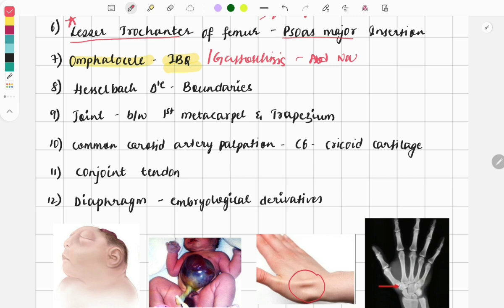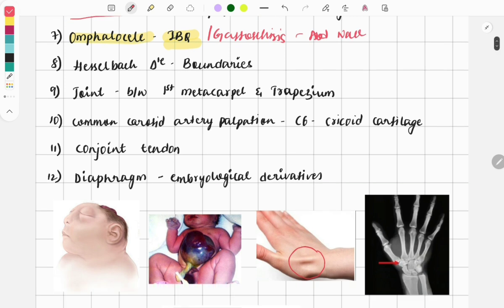The next topic: Hesselbach triangle. A question was asked on its boundaries—I think the lateral boundary—and the answer was the inferior epigastric vessels. So it becomes important for you to look at all the boundaries of the Hesselbach triangle.